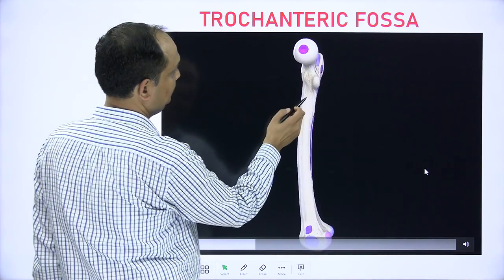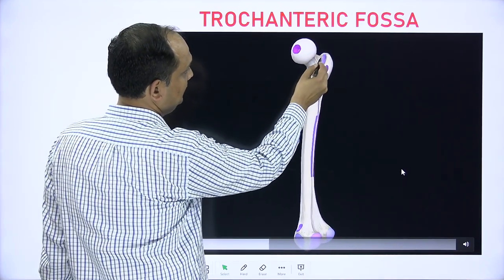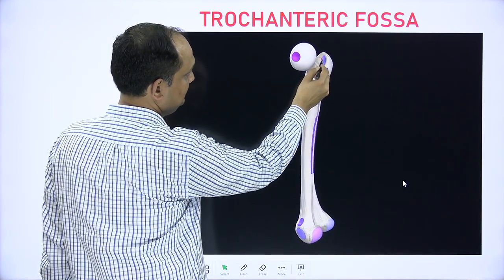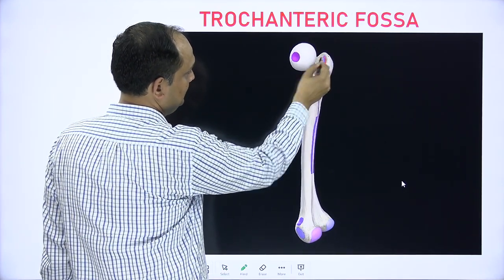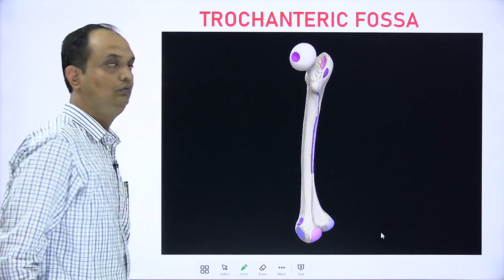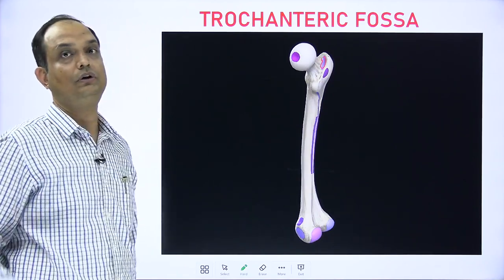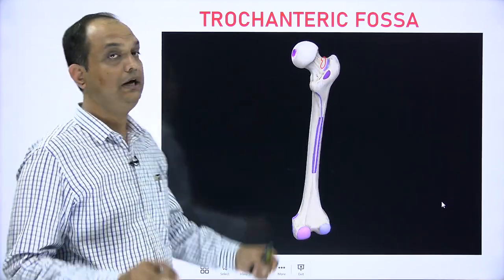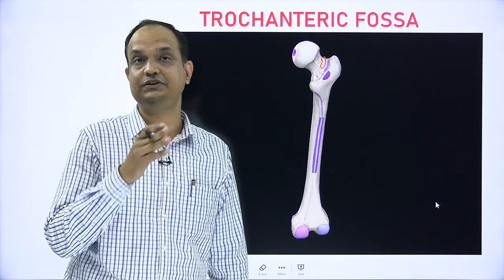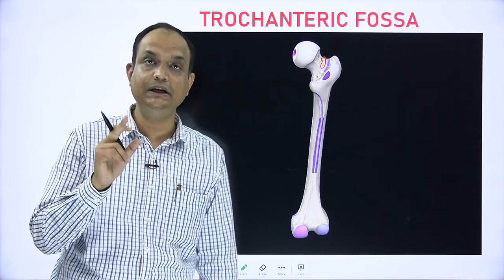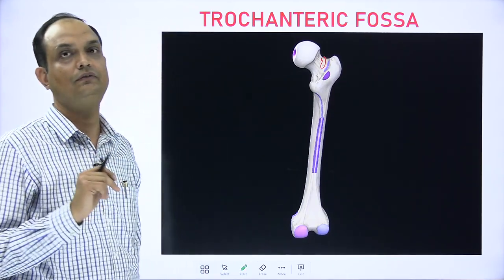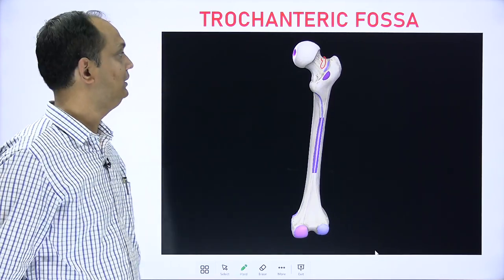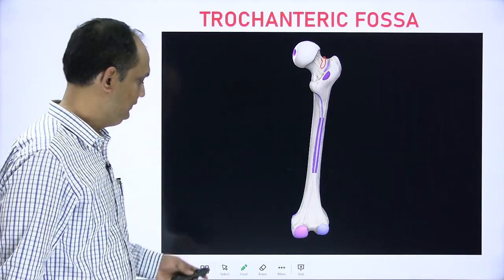The trochanteric fossa is a prominent depression on the medial surface of the greater trochanter of the femur.